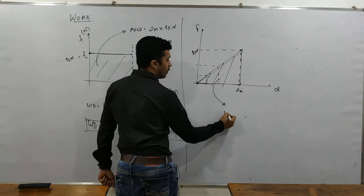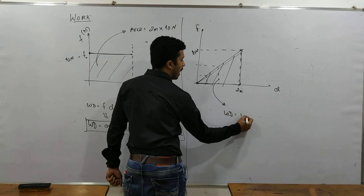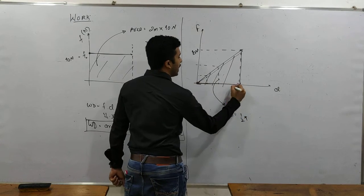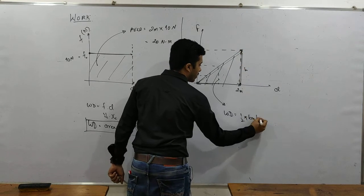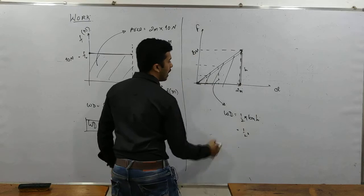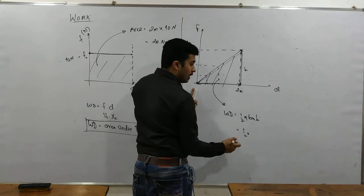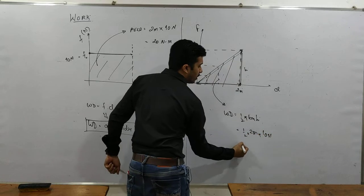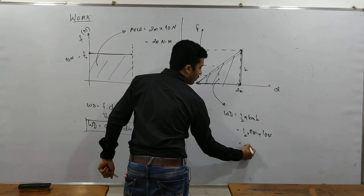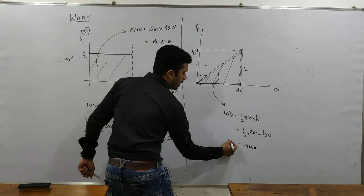What is the area of the graph? Work done is nothing but half into base into height. You are correct. Half into base 2 meter into what is the height? It is 10 Newton. So this is 5 Newton meter is the answer.